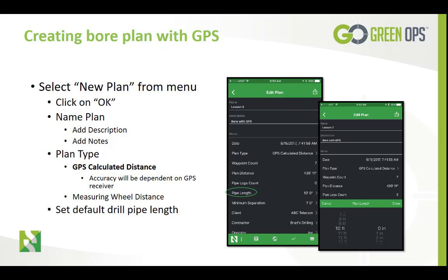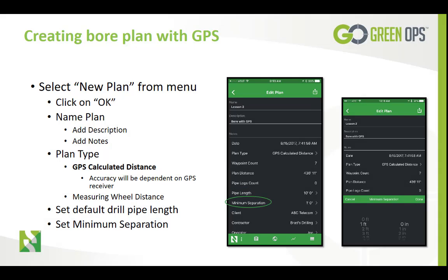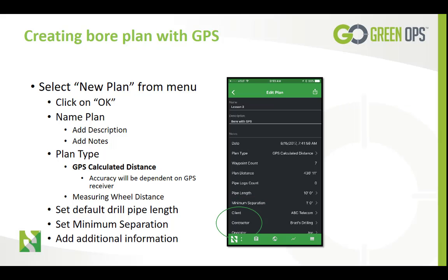Next we will need to set our drill pipe length. Next, be sure to set the minimum distance separation for the utilities you will be crossing. This defaults for all utilities and obstacles, so be sure to take that into consideration with this setting. For this tutorial we will use one foot or 30 centimeters. You can also add additional information such as your client information, your information as the contractor, as well as your drill operator information.